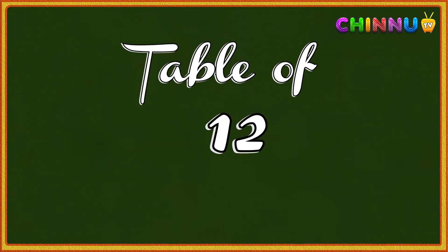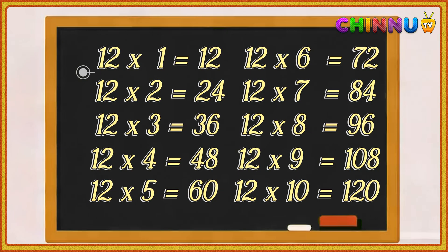Let's learn the table of 12 one more time. 12 1s are 12, 12 2s are 24, 12 3s are 36, 12 4s are 48, 12 5s are 60.